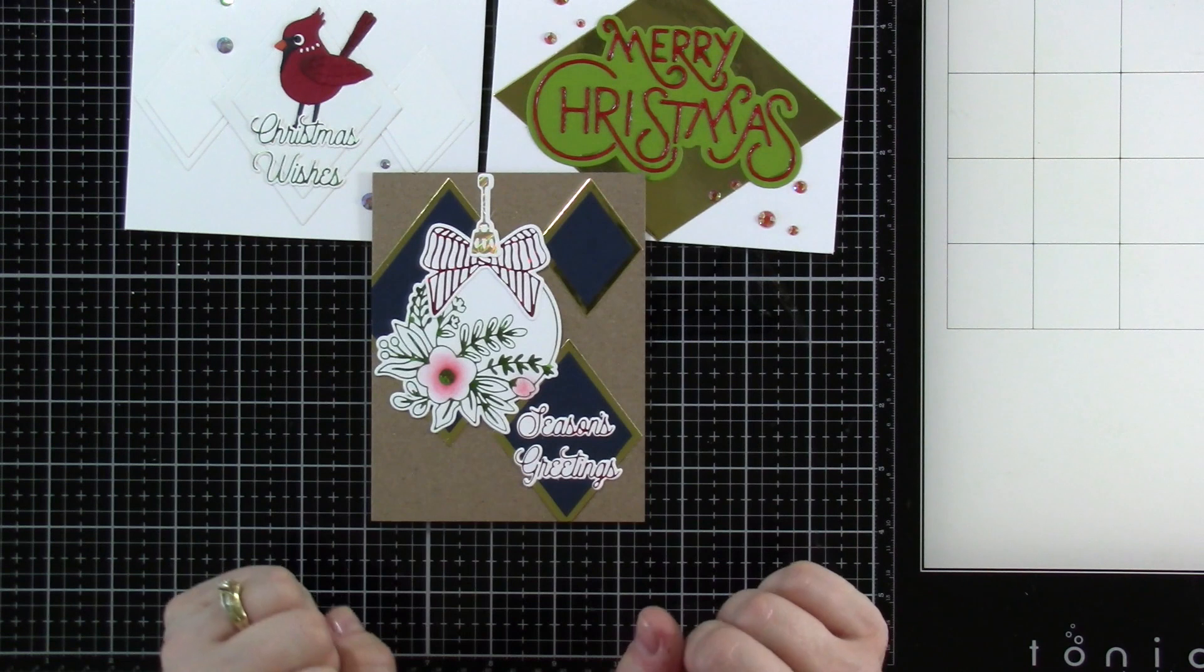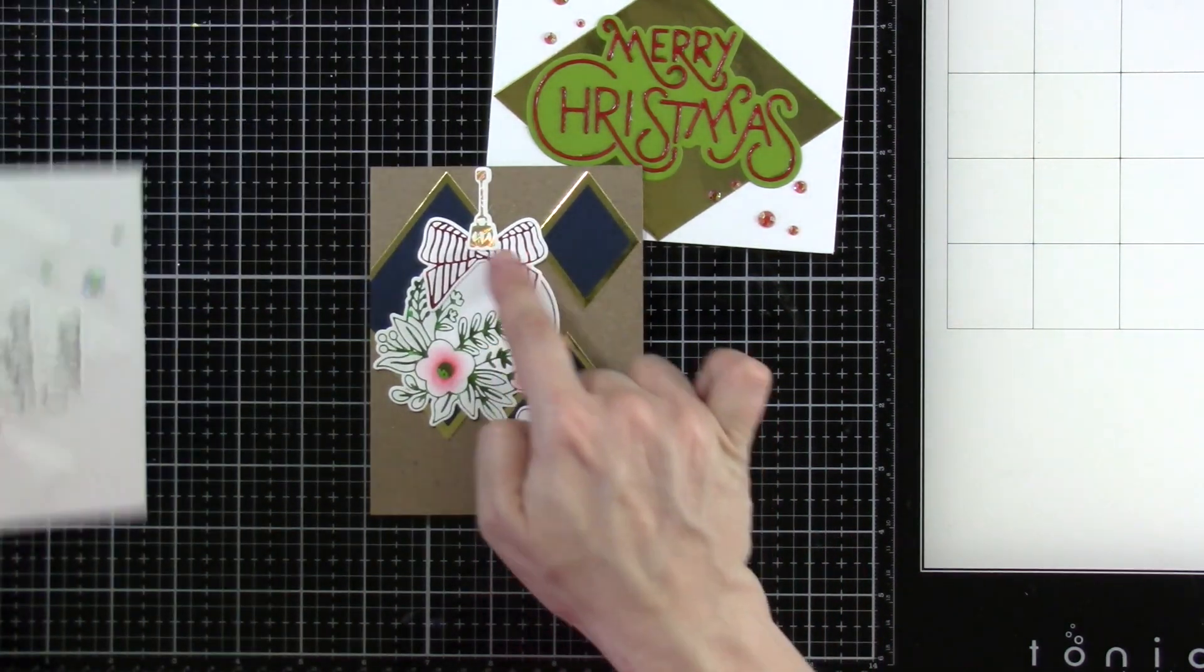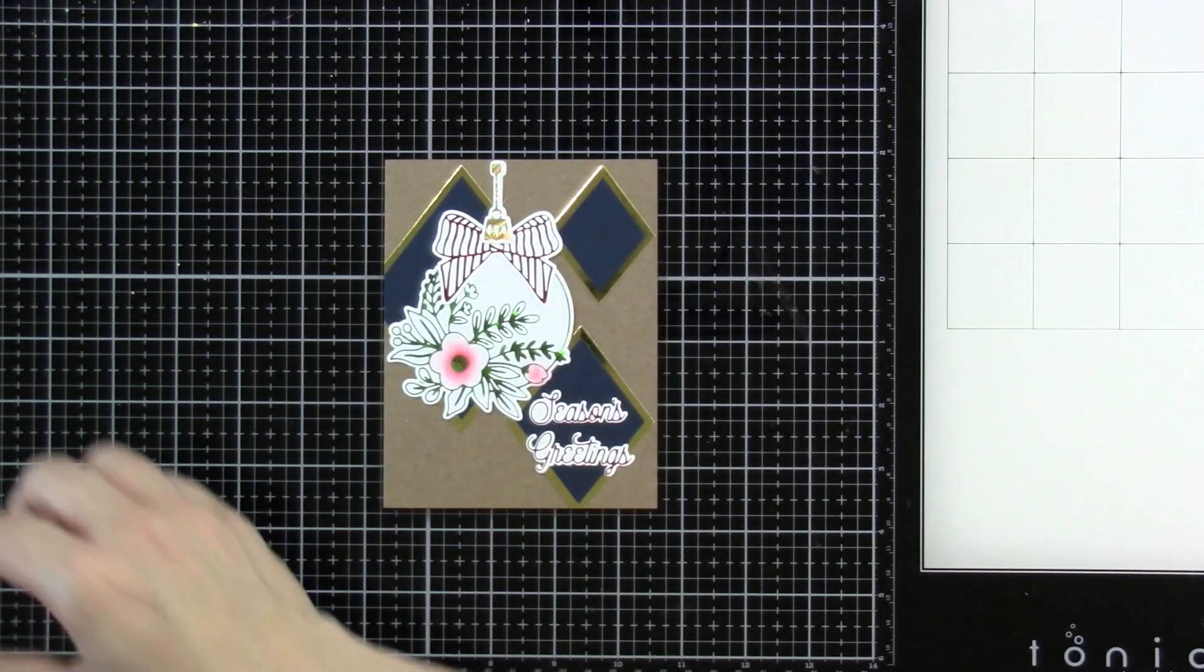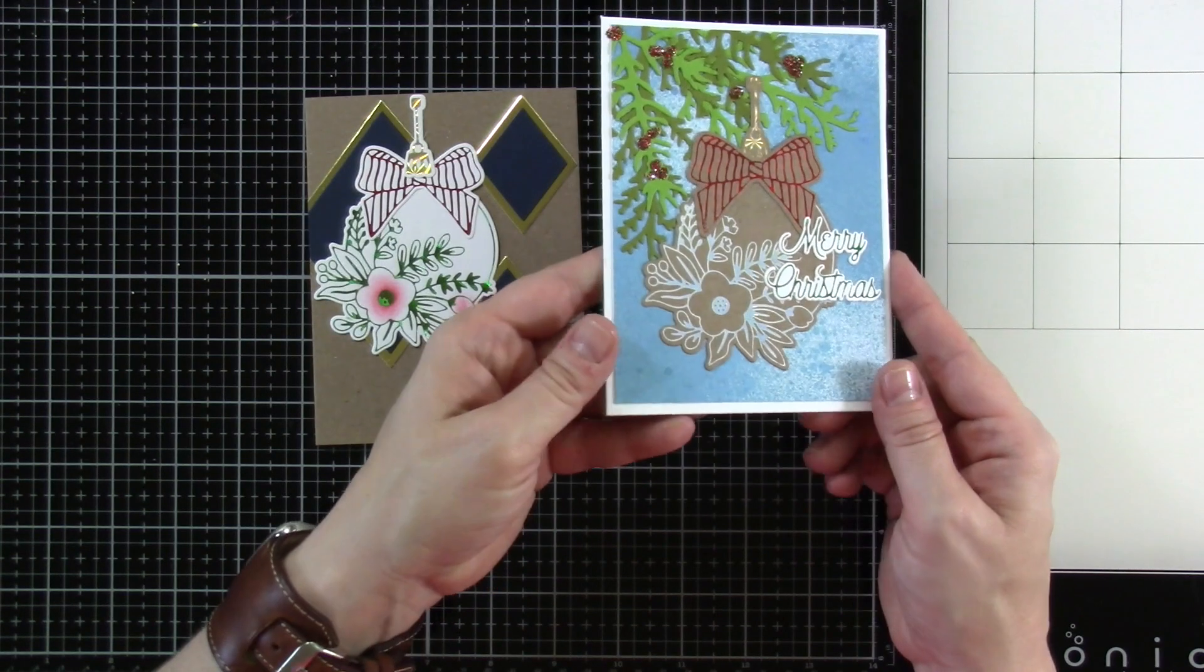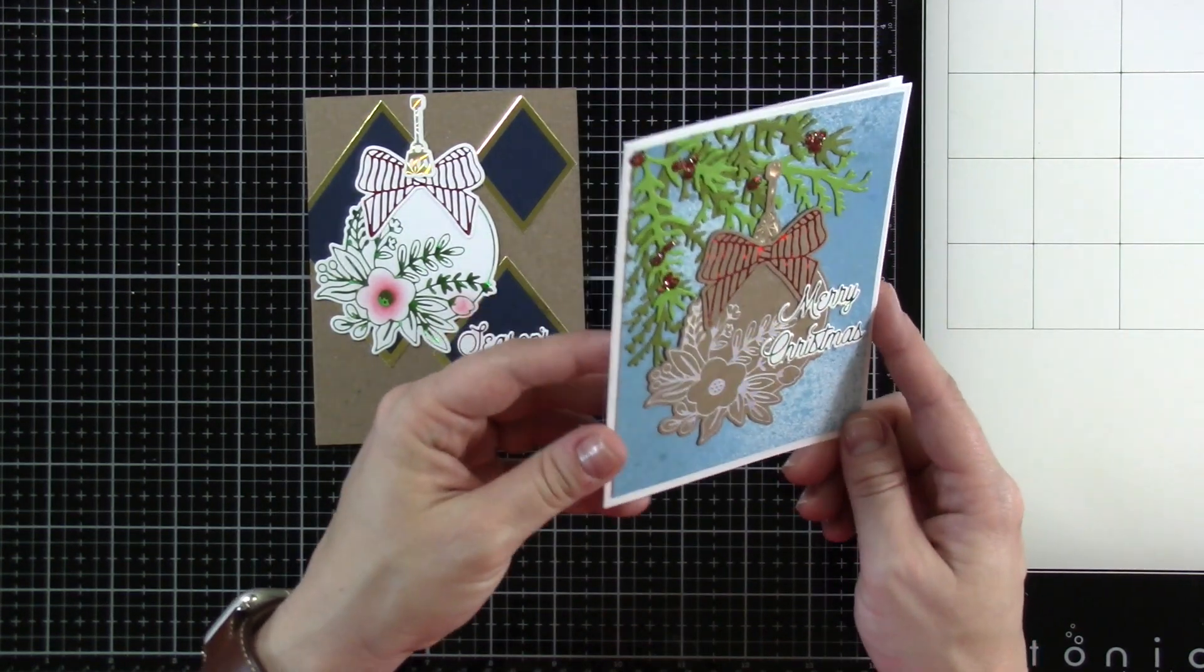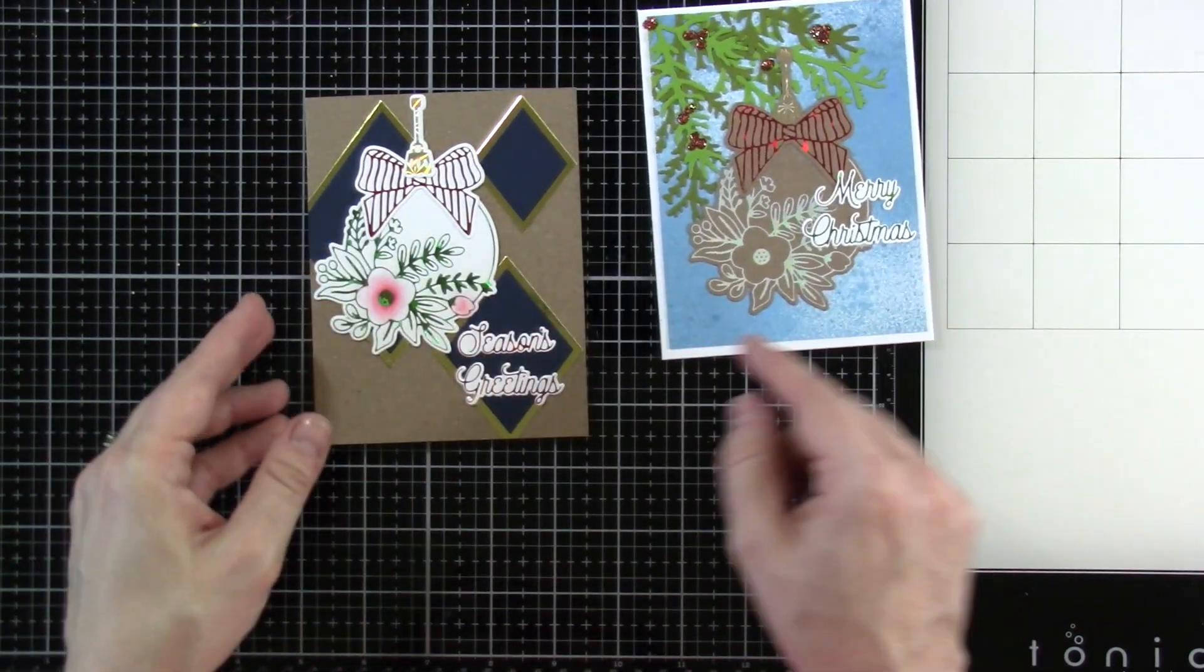Some more of our Glimmer Greetings include our Blooming Ornament, which you see here. And then you also saw this one earlier. So I did it on some craft cardstock using some different colors of the Spellbinders Glimmer Foil.